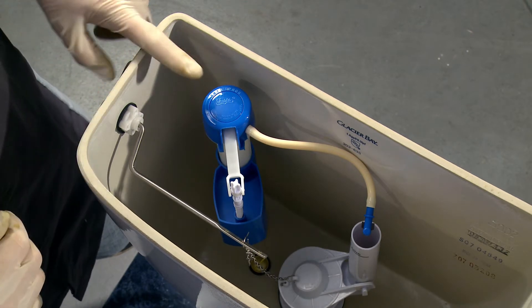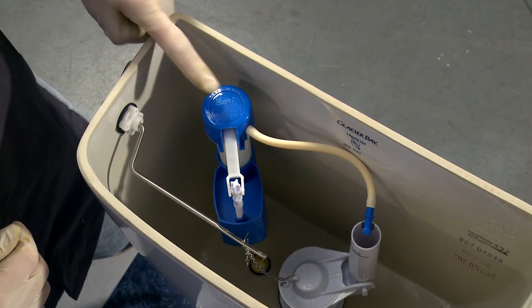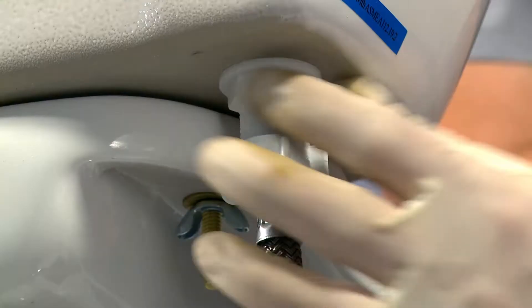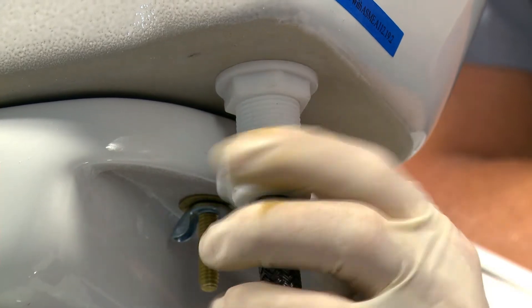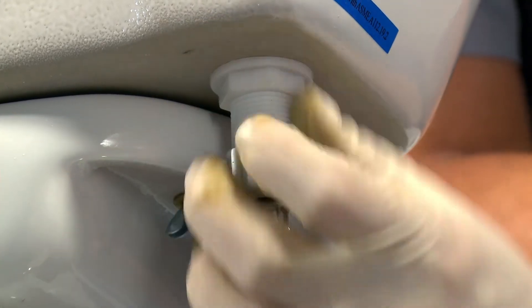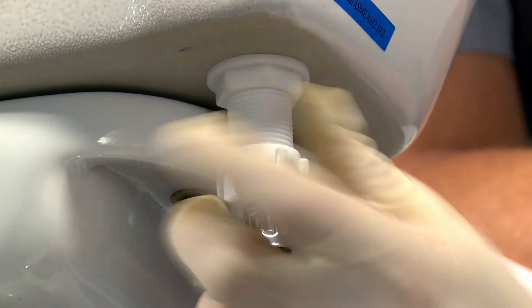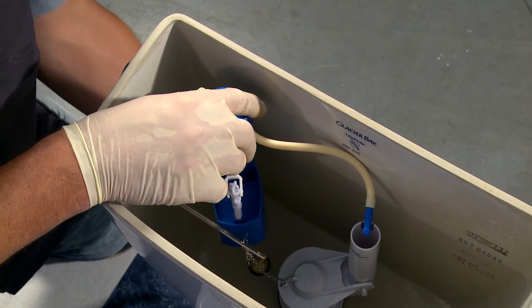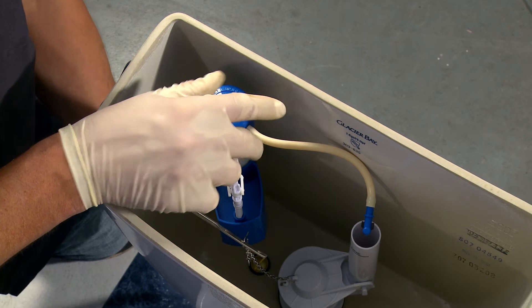Now the next thing we need to do is detach the supply line from the fill valve. You'll still get some water even though you've turned the supply line valve off, but that's okay, that's normal.